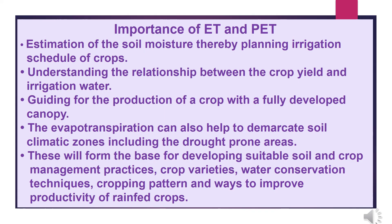In this slide, we have shown the importance of evapotranspiration and potential evapotranspiration. These include: estimation of soil moisture for planning irrigation schedules; understanding the relationship between crop yield and irrigation water; guiding production of a crop with a fully developed canopy; helping to demarcate soil climatic zones including drought-prone areas; and forming the base for developing suitable soil and crop management practices, selecting crop varieties, water conservation techniques, cropping patterns, and ways to improve productivity of rain-fed crops.